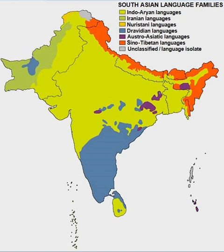The end of the Vedic period is marked by the composition of the Upanishads, which form the concluding part of the Vedic corpus in the traditional compilations, dated to roughly 500 BCE. It is around this time that Sanskrit began the transition from a first language to a second language of religion and learning, marking the beginning of classical India.